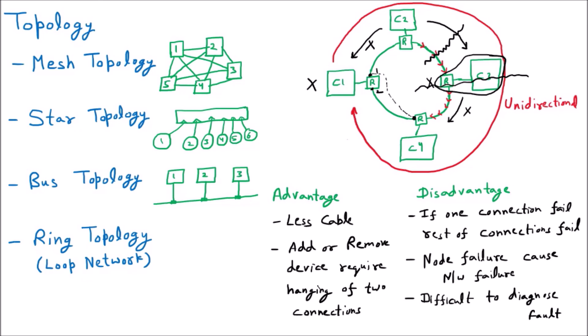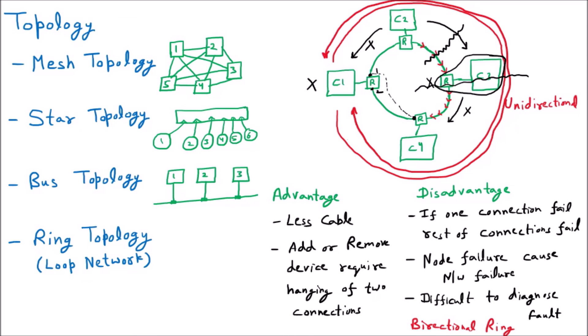The solution to all these problems is the bidirectional ring. In a bidirectional ring topology, we can send the data in the reverse — anti-clockwise — direction as well. However, if C2 wants to send data to C4, it could arrive via both paths, causing duplicate packets. That is why token management technique is applied here as well. So the solution is the bidirectional ring combined with token management technique. This is all about ring topology, also known as the loop network.